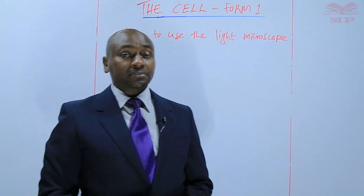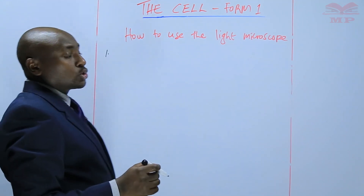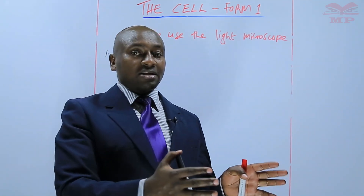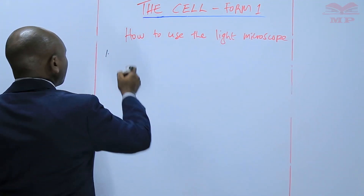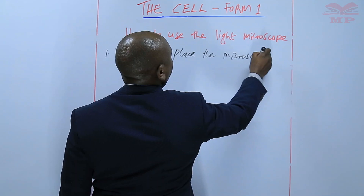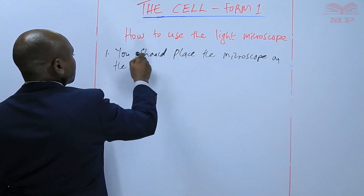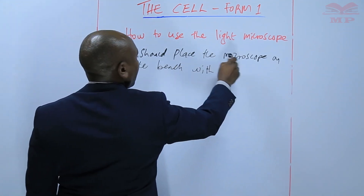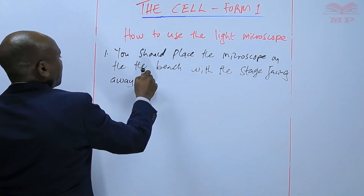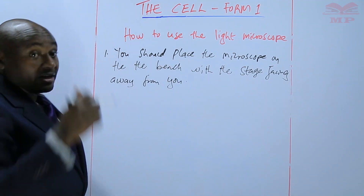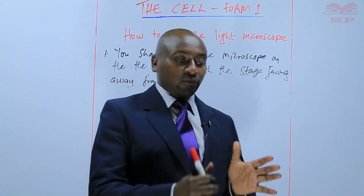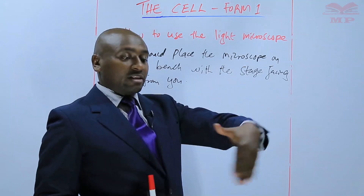The first thing is that the learner should place the microscope on the bench with the stage facing away from you. This is very important because when the stage is facing away from you, you do not obstruct the light. So you should be on the side that has the arm, and then on the other side the stage should be away.